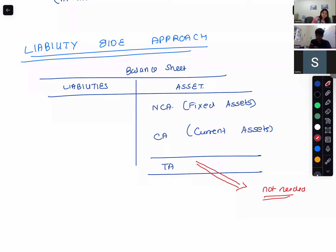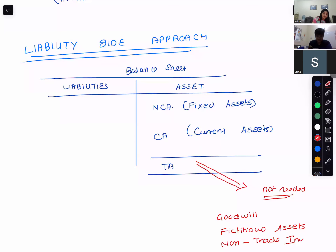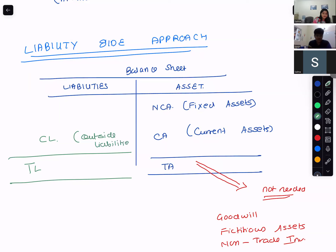From all assets, what is not needed is goodwill, fictitious assets, and non-trade investments. So from all the assets, if you subtract goodwill, fictitious assets, and non-trade investments, and then subtract your outside liabilities — that is your current liabilities or creditors — you are going to get capital employed. This is the asset side approach: starting from assets and arriving at capital employed.